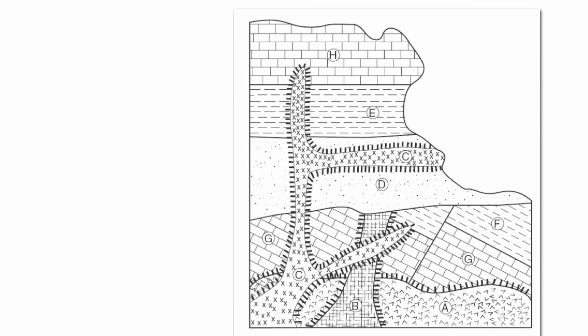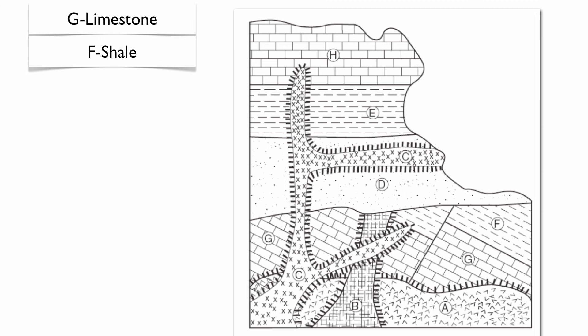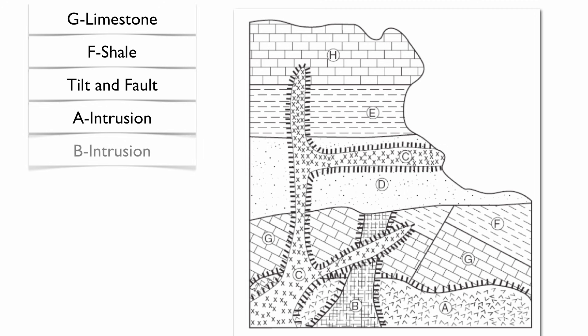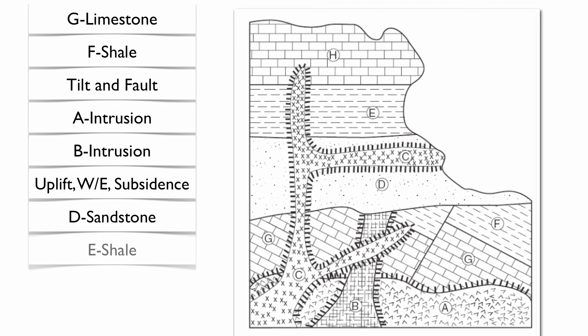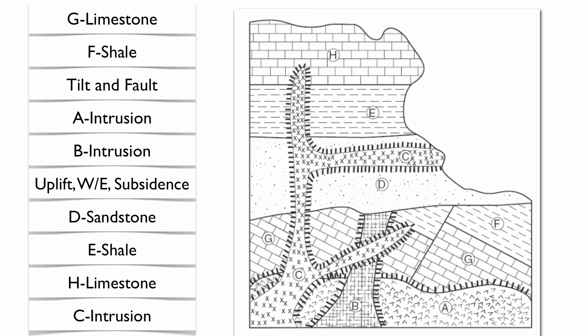Let's put this into order, starting with the oldest layer on the bottom. First G, your limestone; then F, your shale; then those rock layers are tilted and faulted; then Intrusion A, then Intrusion B; then the unconformity — uplift, weathering and erosion, then subsidence; then D, your sandstone; E, your shale; H, your limestone; then Intrusion C, which touches every single rock layer. If you want to get technical, you can also include uplift and weathering and erosion at the surface. Hopefully this gives you insight into your sequence of events.